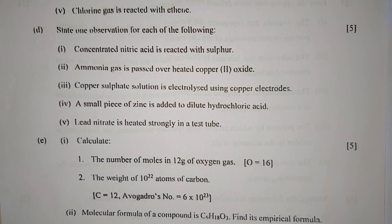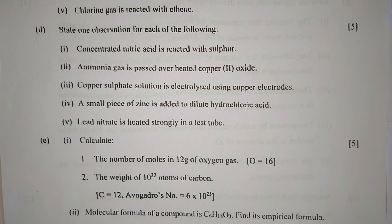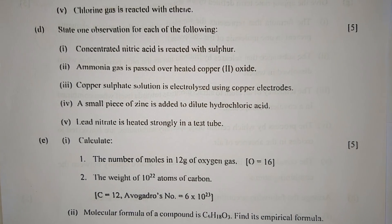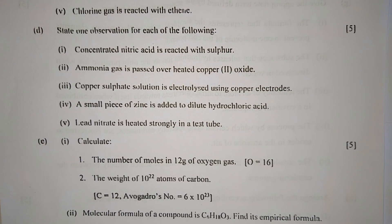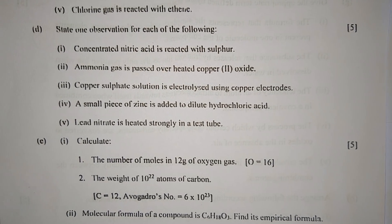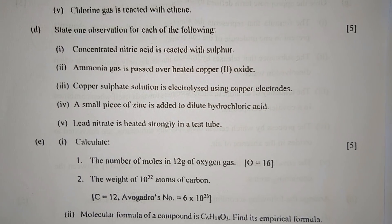Part D: State one observation for each of the following. Number one: Concentrated nitric acid is reacted with sulfur. When concentrated nitric acid is reacted with sulfur, reddish-brown fumes of nitrogen dioxide is produced.